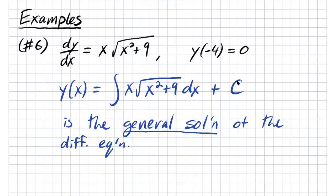So it's the general solution. What this means is that if we take any function which satisfies this differential equation, it must be of this form — this gives us all possible solutions. That's what we mean by the general solution: it satisfies the differential equation for all values of the constant parameter C, and all possible solutions are of this form.